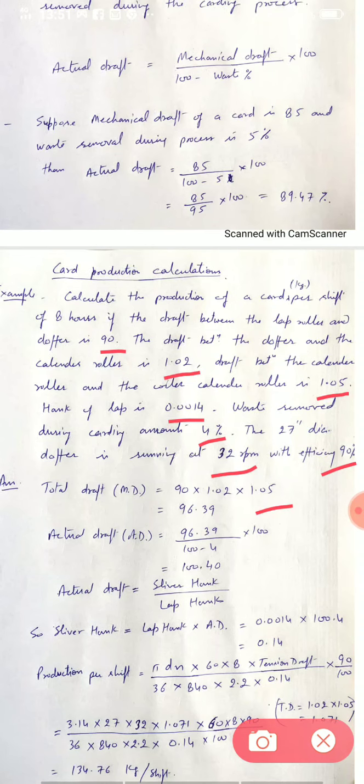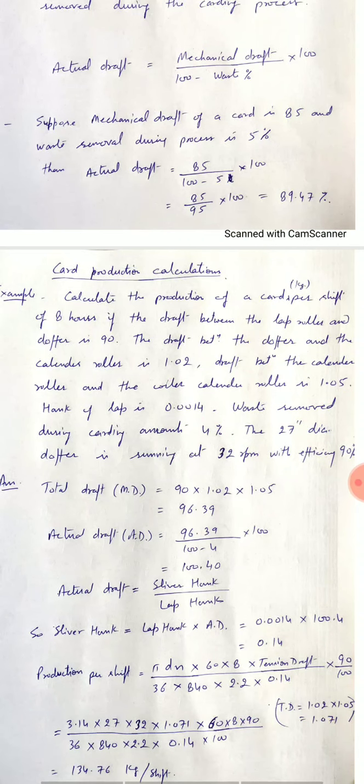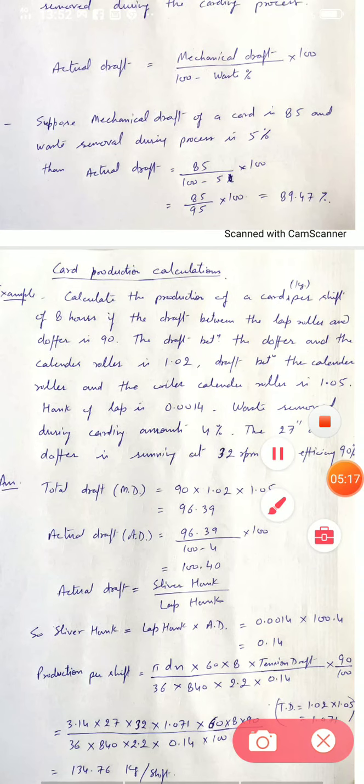Now from the formula of actual draft we can calculate the sliver hank. Actual draft is equal to sliver hank divided by lap hank. As you know hank delivered divided by hank fed. So sliver hank is 0.0014 multiplied by 100.4. It comes 0.14.